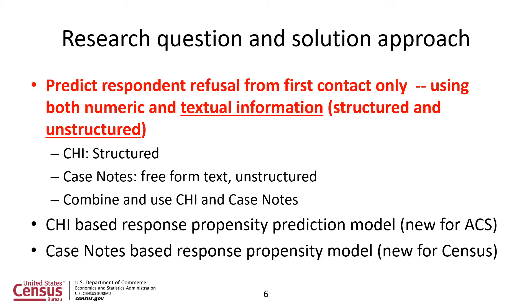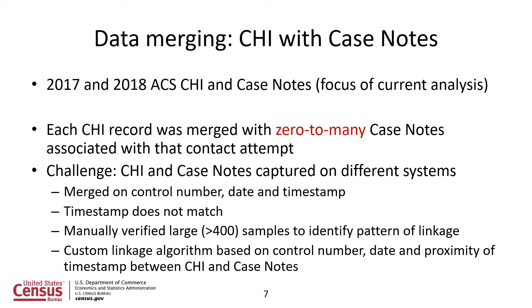The CHI-based response propensity prediction model is new for ACS, and the case notes-based response propensity model is new for the whole of the Census Bureau. The CHI data and the case notes data are captured and stored on different systems with different timestamps and are not easy to match. We had to go through a significant manual process to combine each CHI record with zero-to-many case notes associated with that contact attempt.